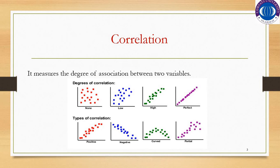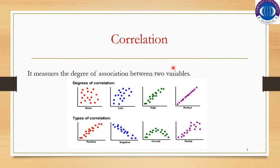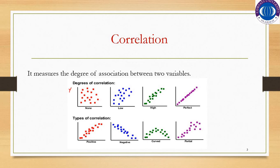Correlation measures the degree of association between two variables. If we have two variables x and y, with y on the y-axis and x on the x-axis, by drawing the scatter diagram we can find out the correlation between those two variables. In the first graph, there is no relationship visible, so there is no correlation between these two variables.